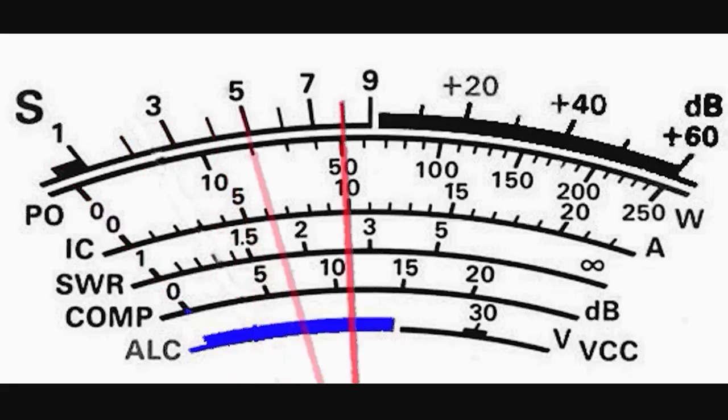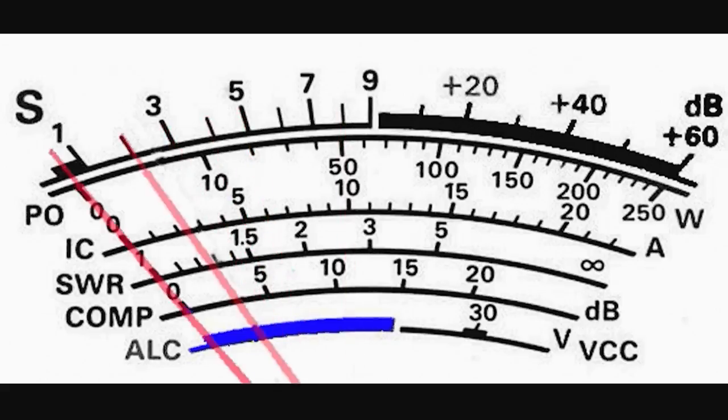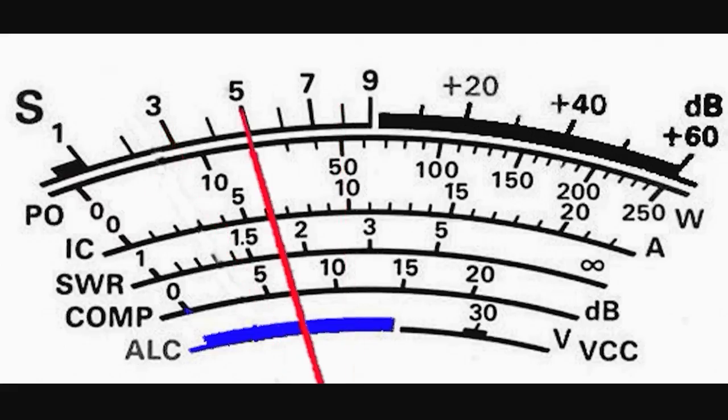Also on most meters above that or in the same area is the compression, sometimes labeled processor. As you can see on that graphic, there's 0, 5, 10, 15, 20, and then 30 dB of compression.